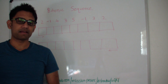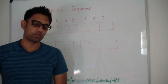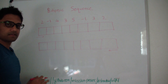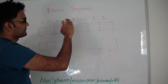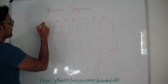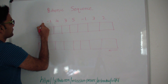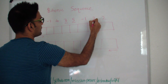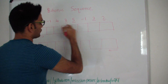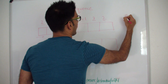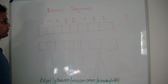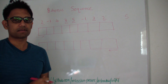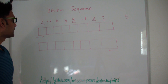Our aim is to find the longest such subsequence. For example, the longest subsequence which first increases and then decreases is 2, 3, 5, 3, and 2. So the total length is 5. Our aim is to find the length of the longest such subsequence.